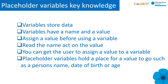Let's recap. Variables store data. Variables have a name and a value. Assign a value before using a variable. Read the name, act on the value. You can get the user to assign a value to a variable. Placeholder variables hold a place for each value to go, such as a person's name, date of birth, or age, or anything you can think of.